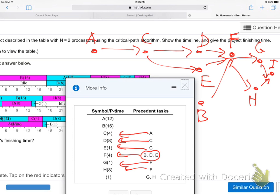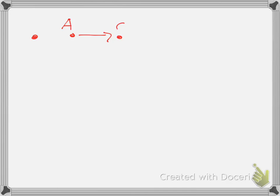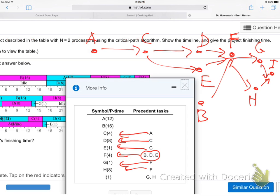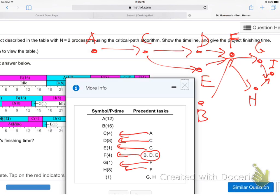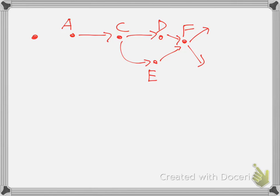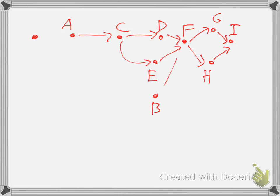Okay, now I've got to redo it because I ran out of room. I didn't realize how far I'd go. So there's the general thing. I've just got to make it nicer now. I'm going to do this real quick over here. This will be A. A points to C, and C points to D and E, and D and E point to F, and F points to G and H, which point to I. And also, I forgot B — B points to F also.